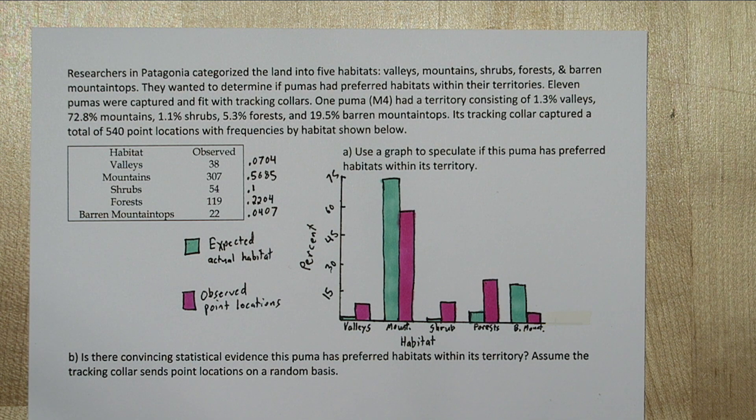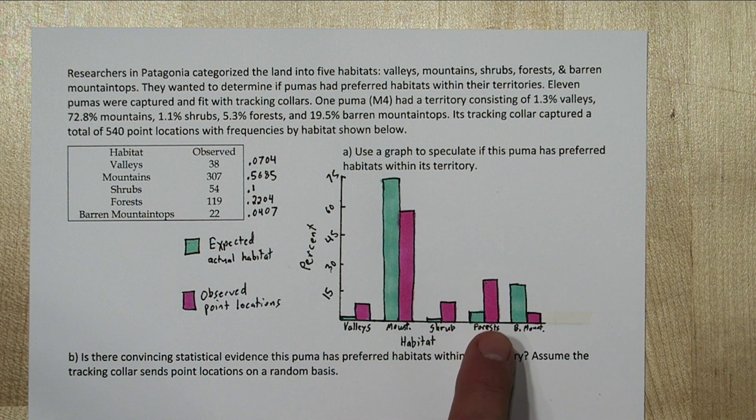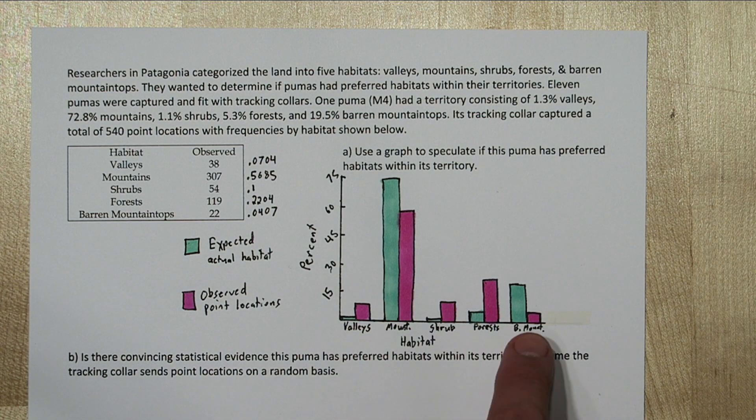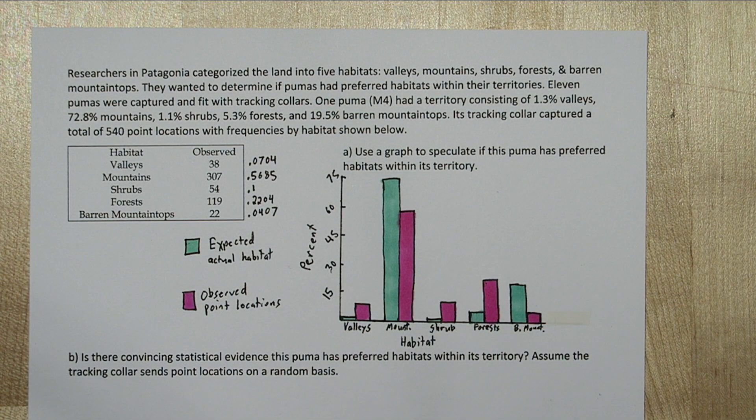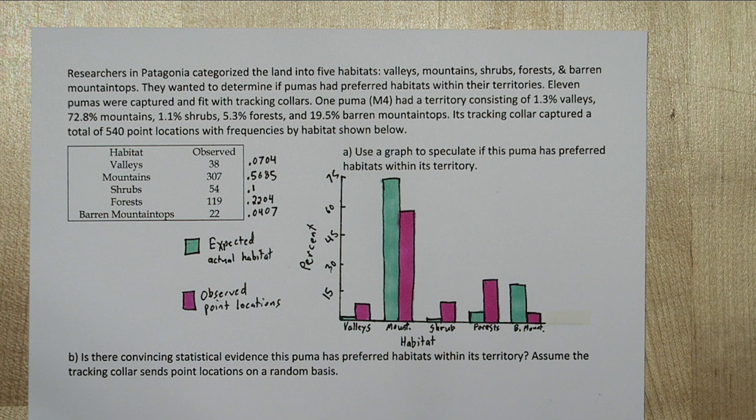it seems like the puma spent more time than we would expect in the valleys, shrubs, and forest, and less time than we'd expect in the mountains and the barren mountaintops. So it does seem to have some preference. But are these differences we're seeing significant? That's what Part B is all about.